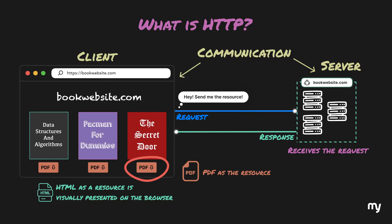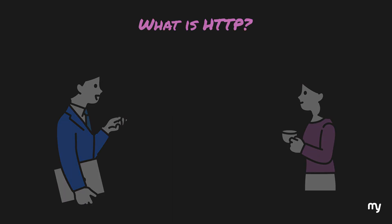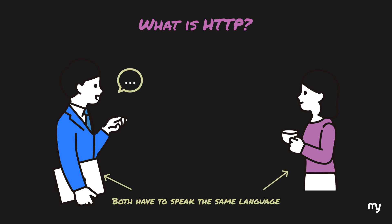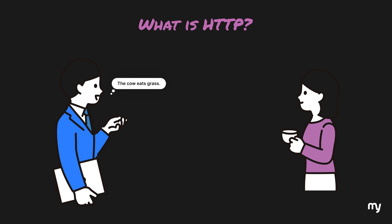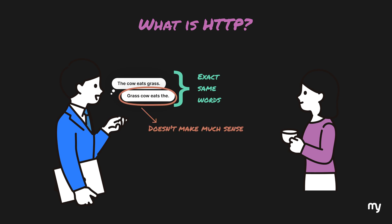Now for this communication to happen, the client and the server must understand each other. In a real life analogy, for two people to communicate with each other, they both have to speak the same language. If they both speak English, they have to abide by the rules of English grammar to create sentences. If they don't, their communication could fail. For example, the sentences "the cow eats grass" and "grass cow eats the" have exactly the same words, but the latter doesn't make much sense because it doesn't abide by the protocol of English grammar.